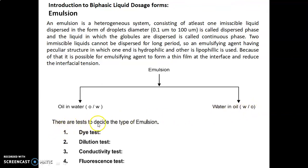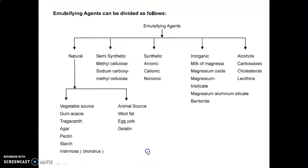There are tests to decide the type of emulsion — a total of four tests: the dye test, dilution test, conductivity test, and fluorescence test. The emulsifying agents can be divided as follows.